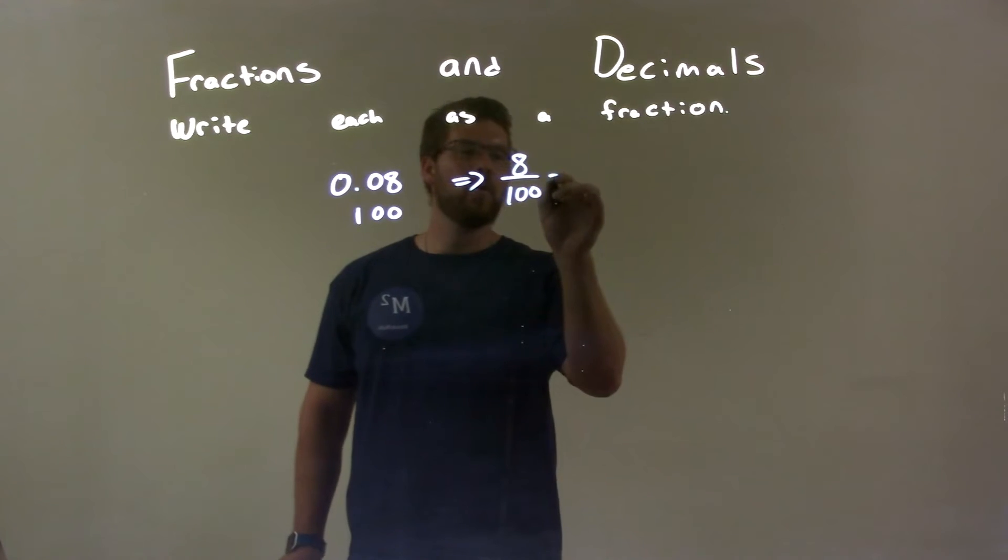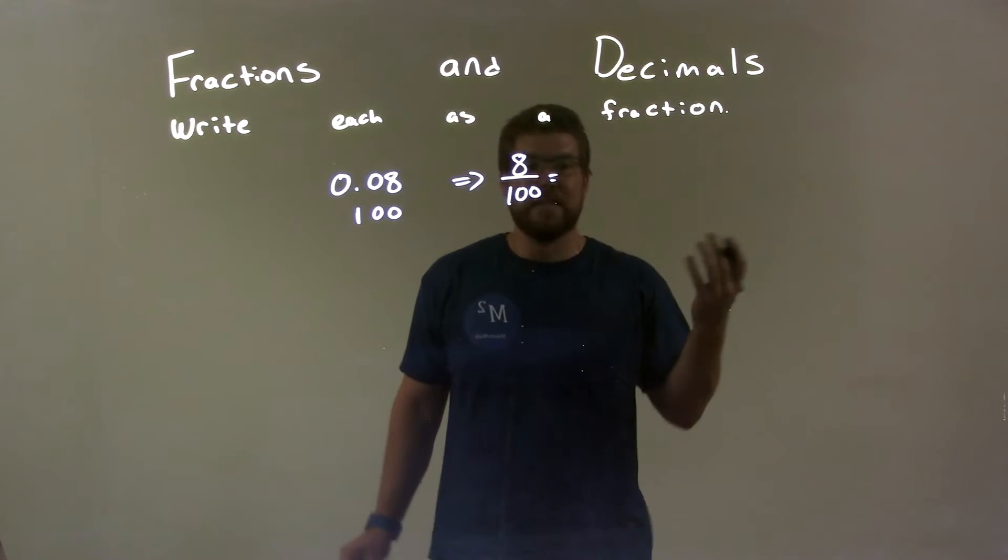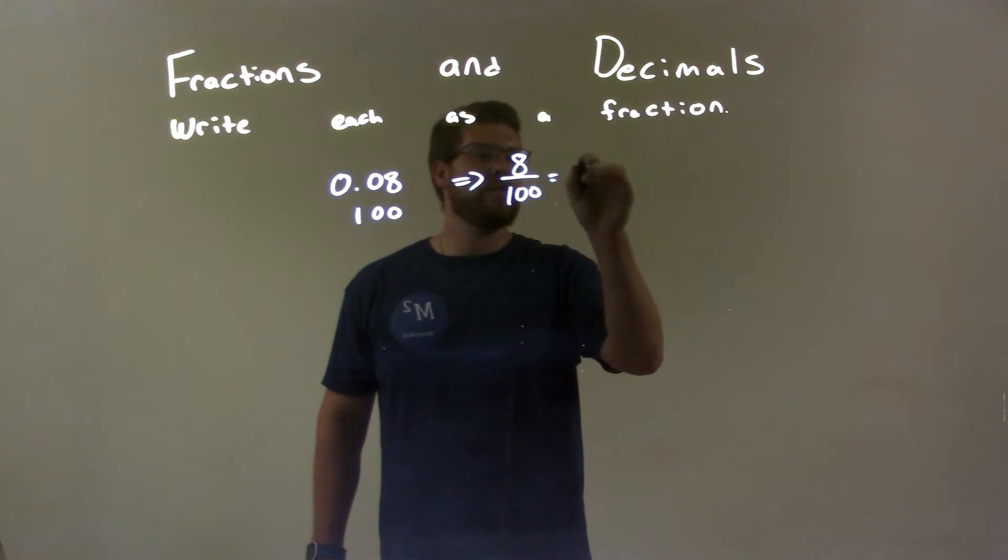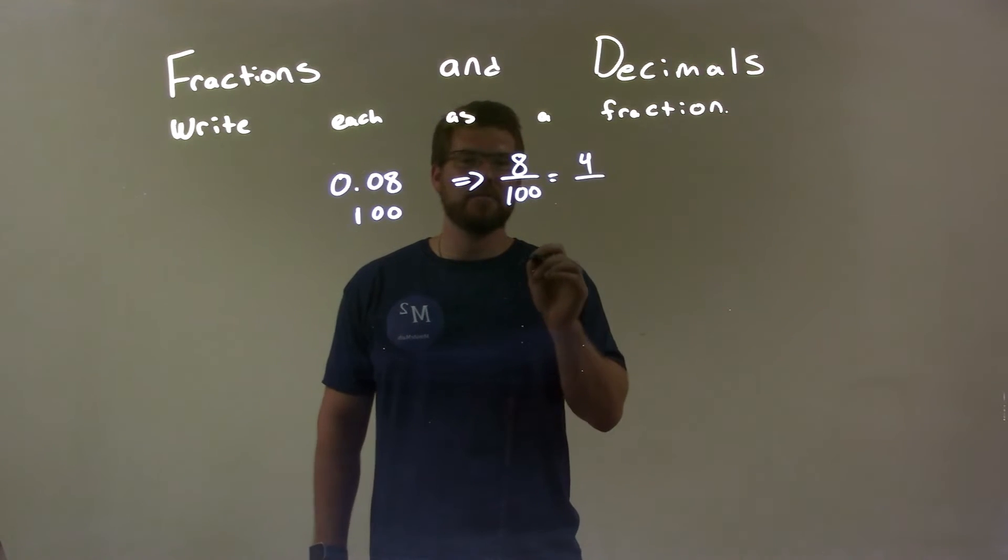Well, 8 over 100, I can simplify this because both are divisible by 2. So 8 divided by 2 is 4 and 100 divided by 2 is 50.